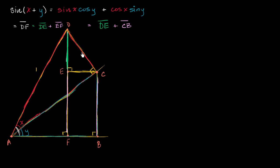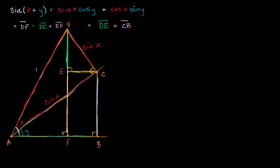Let's go to the top red triangle. Its hypotenuse has length 1. The length of segment DC is the side opposite angle x, so sine of x equals DC over 1, meaning DC equals sine of x. And segment AC: cosine of x equals AC over 1, so the length of AC is cosine of x.